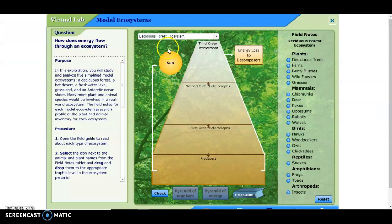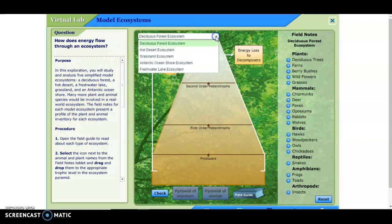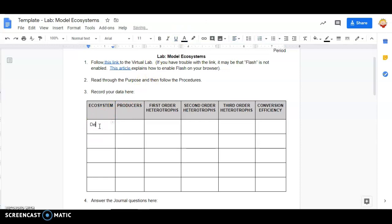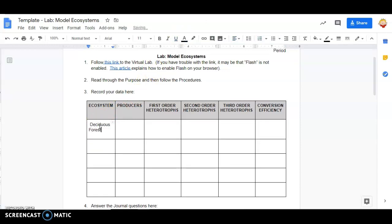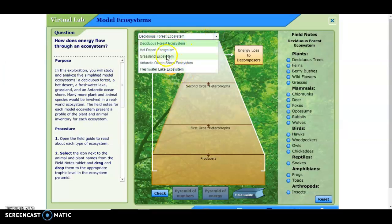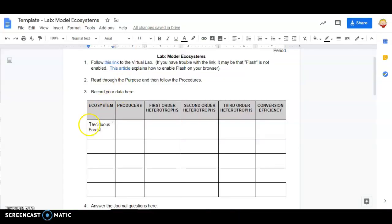So let me do the first one with you. In this exploration you're going to study and analyze five simplified model ecosystems. In each one you have to make an energy pyramid with the different trophic levels with the specific organisms that live there, and then you have to determine the energy efficiency and record that data. So let's do that together. From this drop-down menu you see that you have one, two, three, four, five ecosystems you need to analyze. So I'll do the deciduous forest ecosystem with you. So we're going to start with deciduous forest ecosystem, so I write that right here. Deciduous forest.